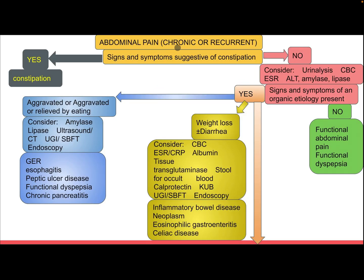How do we approach a child with chronic or recurrent abdominal pain after performing history and physical examination? First, are there signs and symptoms suggestive of constipation? If yes, it is constipation, which will be discussed in another lecture. If no, consider urine analysis, complete blood count, ESR, ALT, amylase, and lipase.